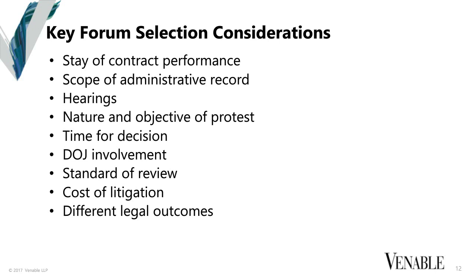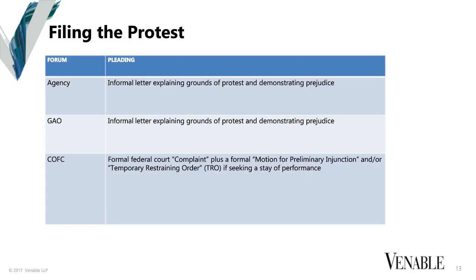At the agency and GAO, you really do just file an informal letter. At the Court of Federal Claims, you file a complaint with much more rigid pleading requirements. At the agency, you're not going to have a protective order. At the GAO and the Court of Federal Claims, you will have protective orders. It's really important to have a good relationship with your outside counsel so that you're comfortable getting a candid assessment of the likelihood of success. The only document at the GAO that has to be redacted is the initial protest.